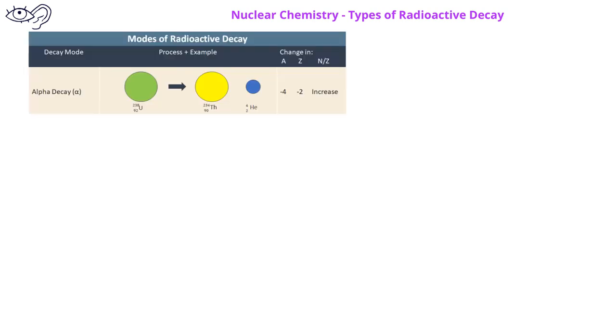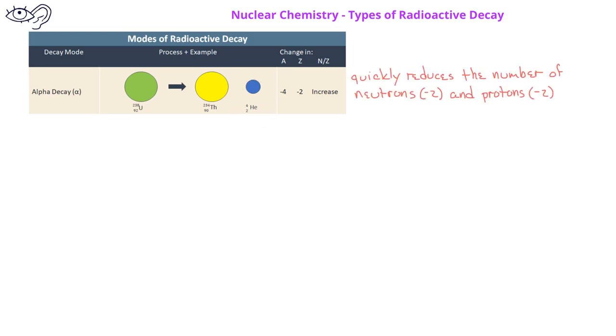When we study radioactivity, we will be discussing different types of radioactive decay based on the types of particles involved. One of the most common types is alpha decay — we saw an example of this with the decay of uranium-238, which produced an alpha particle with a mass number of 4 and an atomic number of 2. Alpha decay quickly reduces the number of neutrons as well as protons in the nucleus: the mass number changes by 4, the atomic number changes by 2, and the neutron-to-proton ratio increases.